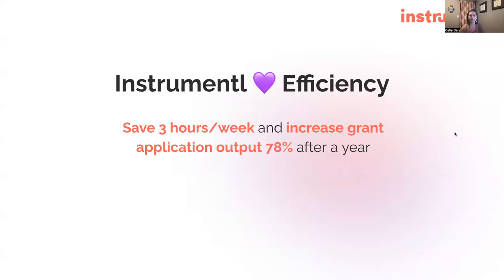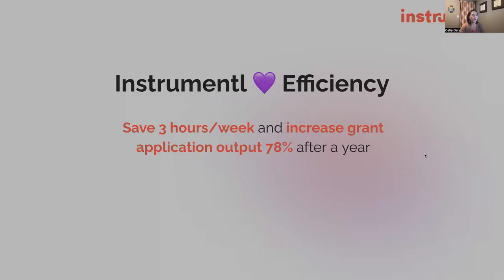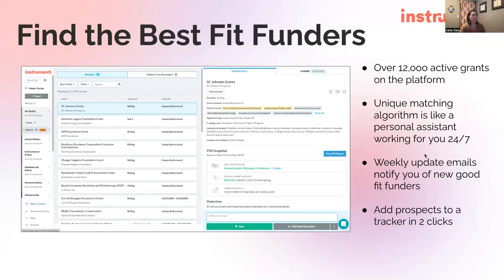We're an efficiency-obsessed team, and Instrumental is saving people time every week on their grants process. We're increasing grant output pretty substantially — by 78% within the first year of using it.